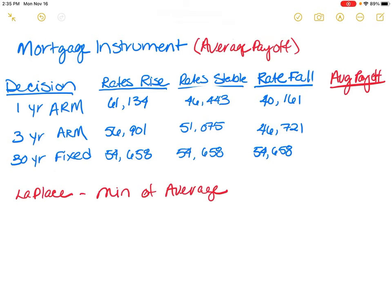Hope you're not tired of this scenario, but we have a couple more things that we can do with it. I am now talking about average payoff. Average payoff is also known as the Laplace method for decision making, and by this we mean that it's very simple.